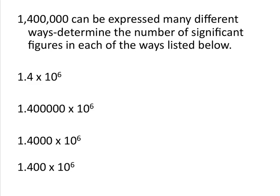Let's look through these examples and determine how many significant figures are in each number. In this first value, only the 1 and the 4 are significant and none of the zeros are. So I've written this value as 1.4 times 10 to the 6. This value has only two significant figures.